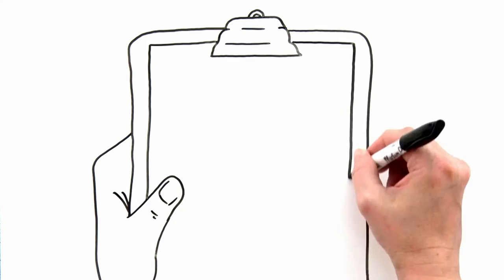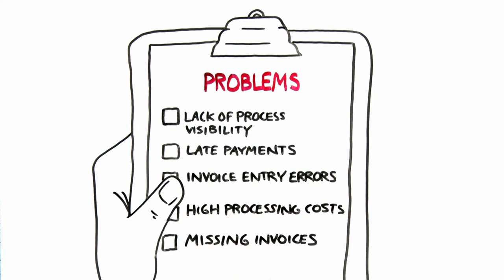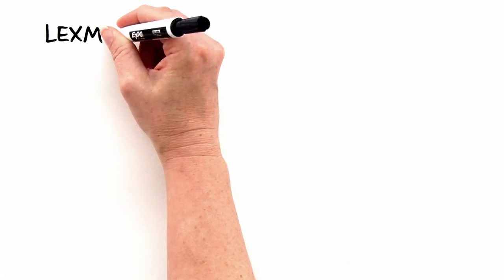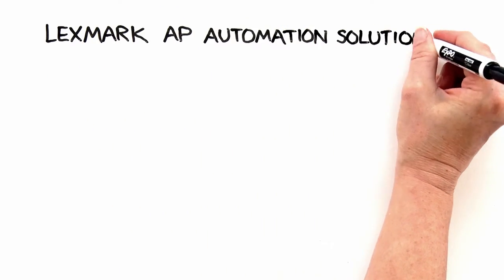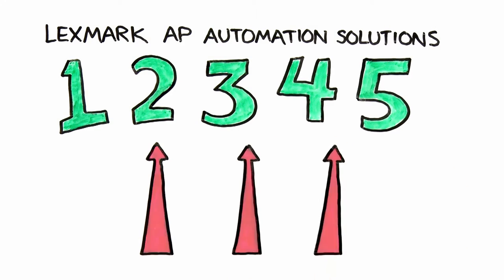Ken realized he desperately needed to improve the company's AP process and better handle the backlog. His search for a solution brought him to Lexmark's AP Automation Solutions. And he discovered five ways they could help put his AP department on the path to more efficiency.